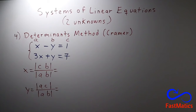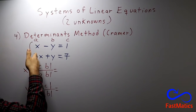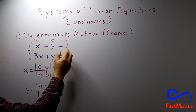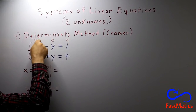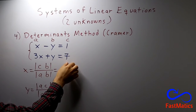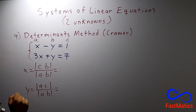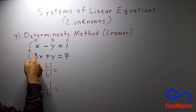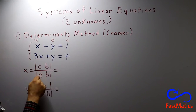But how do you remember that formula? If you are finding x, you imagine that the numbers that are alone are in the place of x, so c is here and b is here — giving you Cb. And if you are finding y, you imagine that the numbers that are alone are in the place of y, so you have Ac.